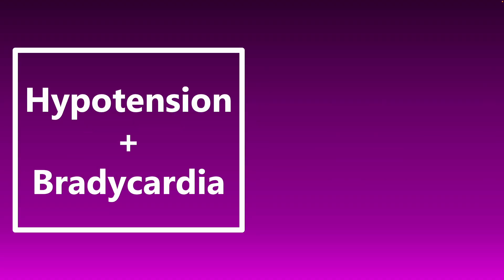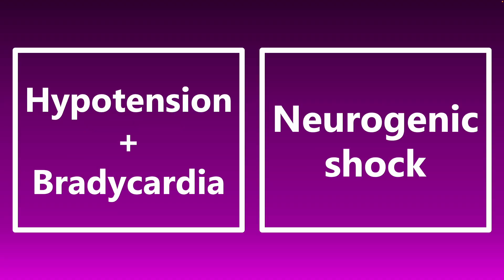Hypotension plus bradycardia — if you see this, be worried about neurogenic shock. Physiologically, when patients have hypotension, the typical response is tachycardia to increase heart rate and promote systemic vascular circulation. But hypotension plus bradycardia — that slow heart rate — is very concerning for neurogenic shock.